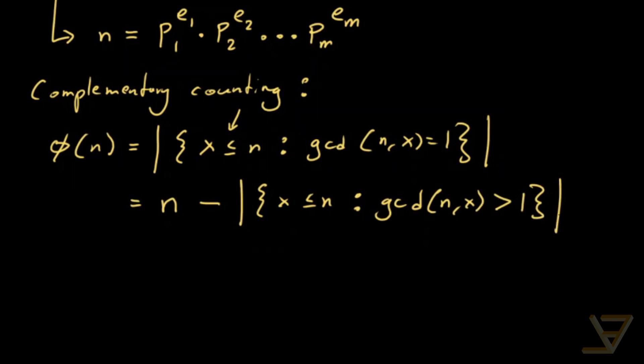So the critical observation now is that the only way this is true is if a prime factor of n divides x. Then the GCD is greater than 1, and if the GCD is greater than 1 then a prime factor of n divides x. So it's biconditional.